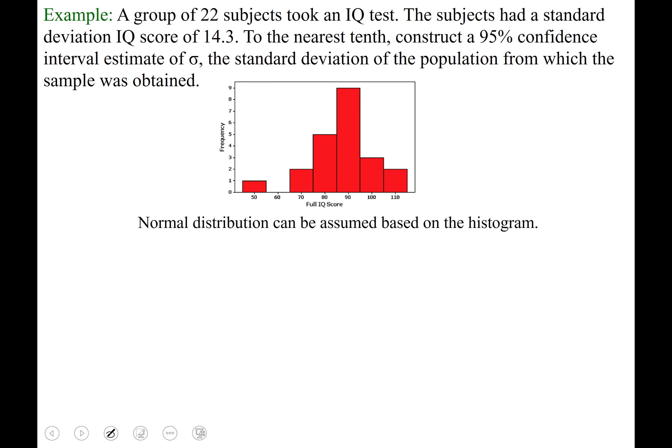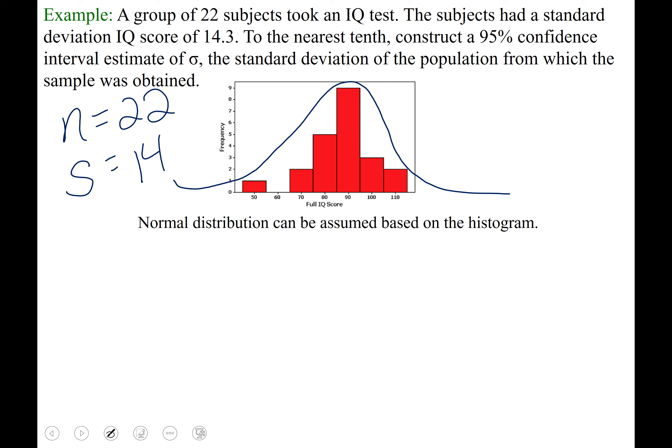A group of 22 subjects took an IQ test. The subjects had a sample standard deviation IQ score of 14.3. Construct a 95% confidence interval estimate of sigma, the standard deviation of the population. Normal distribution can be assumed based on a histogram of the 22 subjects showing a roughly bell-shaped curve, so we can proceed. We have n = 22, s = 14.3, and confidence level 0.95.